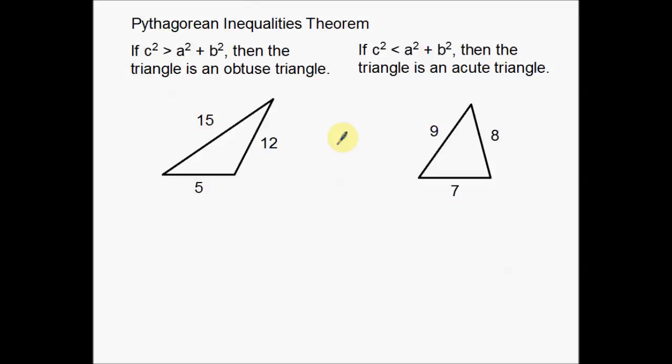Basically the premise was, the idea is if the Pythagorean Theorem works, then it's a right triangle. If it doesn't work, then it's not a right triangle.